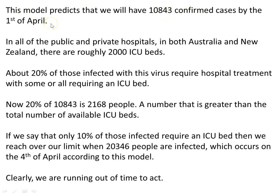This model predicts 10,843 confirmed cases by the 1st of April, which is only days away. In all public and private hospitals in both Australia and New Zealand there are roughly 2,000 ICU beds. About 20% of those infected require hospital treatment, with some requiring an ICU bed. 20% of 10,843 is 2,168 people — a number already greater than the total available ICU beds, and that's not even including car accidents and other demands on ICU beds.